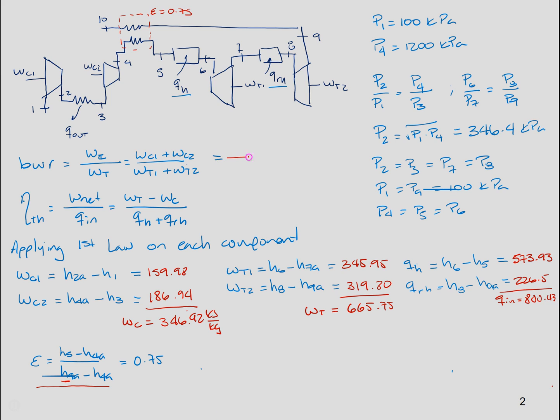So if we substitute in these expressions, we get the back work ratio of 0.5211. In order to get the efficiency, we already computed the total heat in, but we don't have the net work, which will be the difference between work of the turbine and work of the compressor, which is expressed here. And this value is going to be 318.83 kilojoules per kilogram. This gives us an efficiency of 39.83 percent.